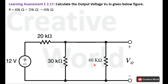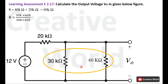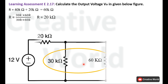Now these two resistances are in parallel. Using the parallel equivalent resistance formula — product divided by sum — their equivalent resistance calculates to 20 kilo ohm. We replace the two parallel resistances with a single 20 kilo ohm resistance.